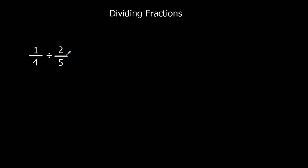When we divide fractions, we use the fact that dividing is the opposite of multiplying. So dividing by 2 fifths is the same as timesing by 5 over 2. And dividing by a half is the same as timesing by 2 over 1. What we do is we change it to a multiply problem — we times and we flip the second one over. So dividing by 2 fifths is the same as timesing by 5 over 2.